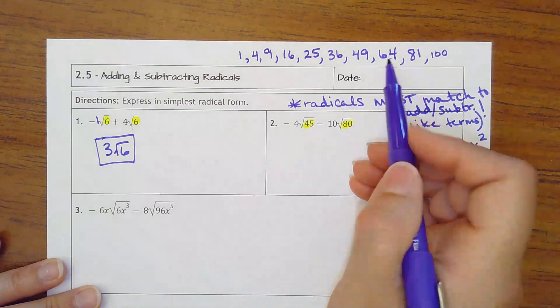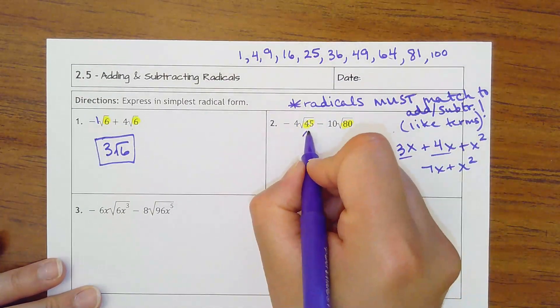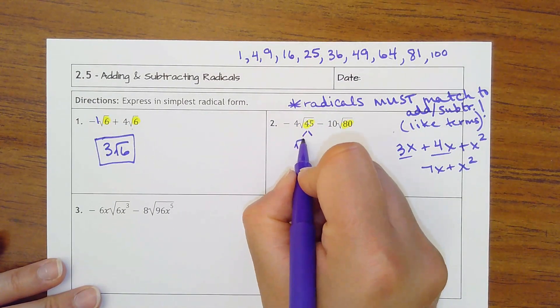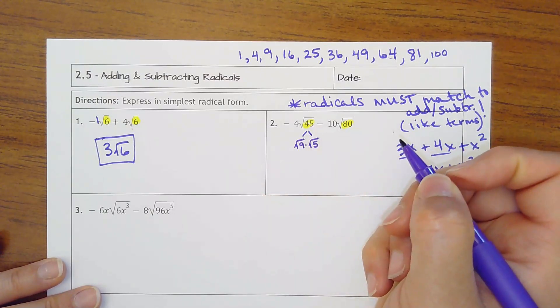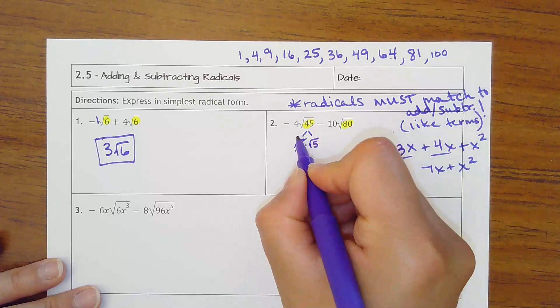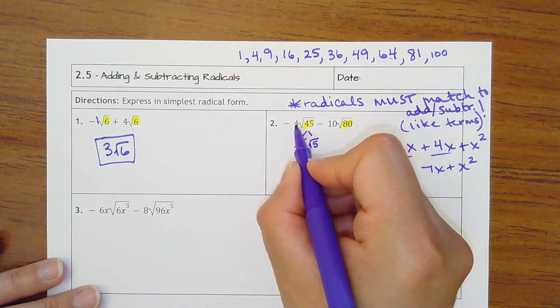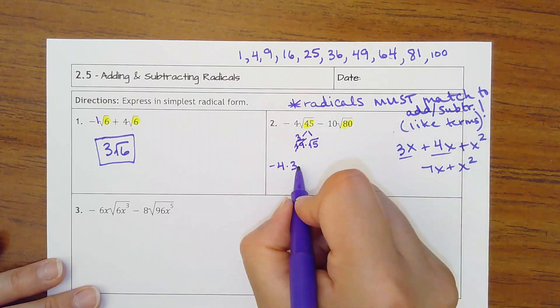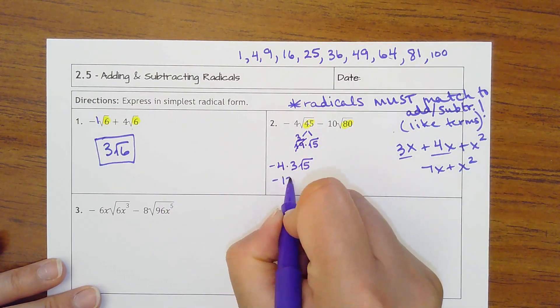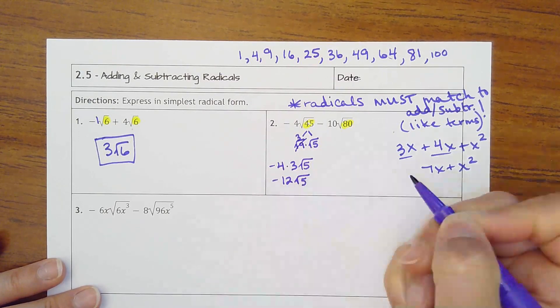45 can divide by 9, so I'm going to split this up into square root of 9 times square root of 5. Square root of 9 is 3. So I need to take negative 4 times the 3 I'm bringing out in front, square root of 5, which would be negative 12 square root of 5.